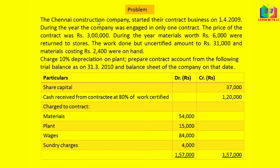The Chennai Construction Company started their contract business on 1-4-2009. During the year, the company was engaged in only one contract. The price of the contract was Rs 3 lakh.